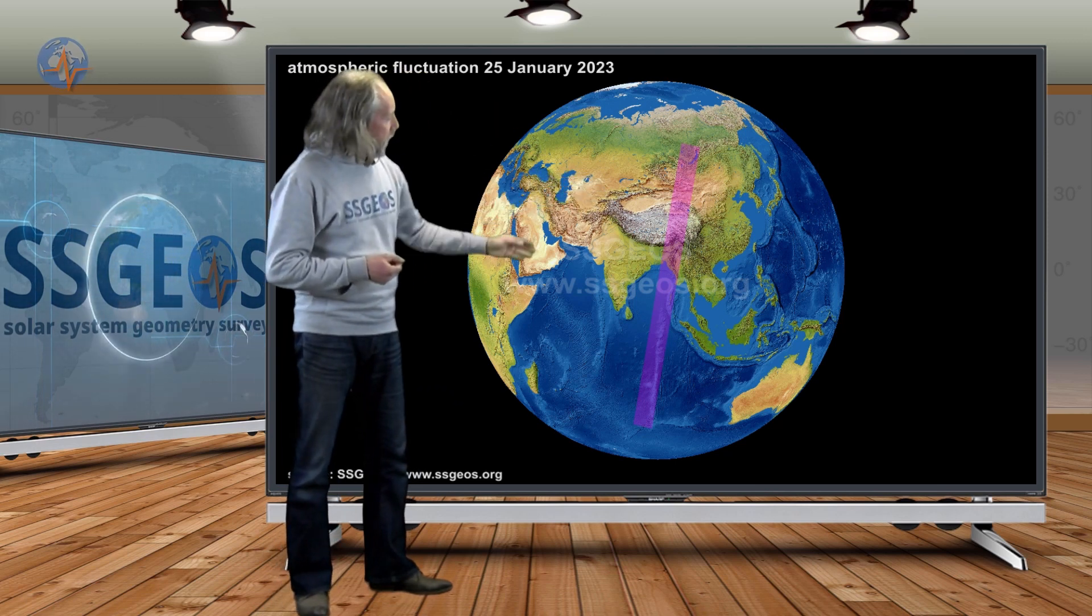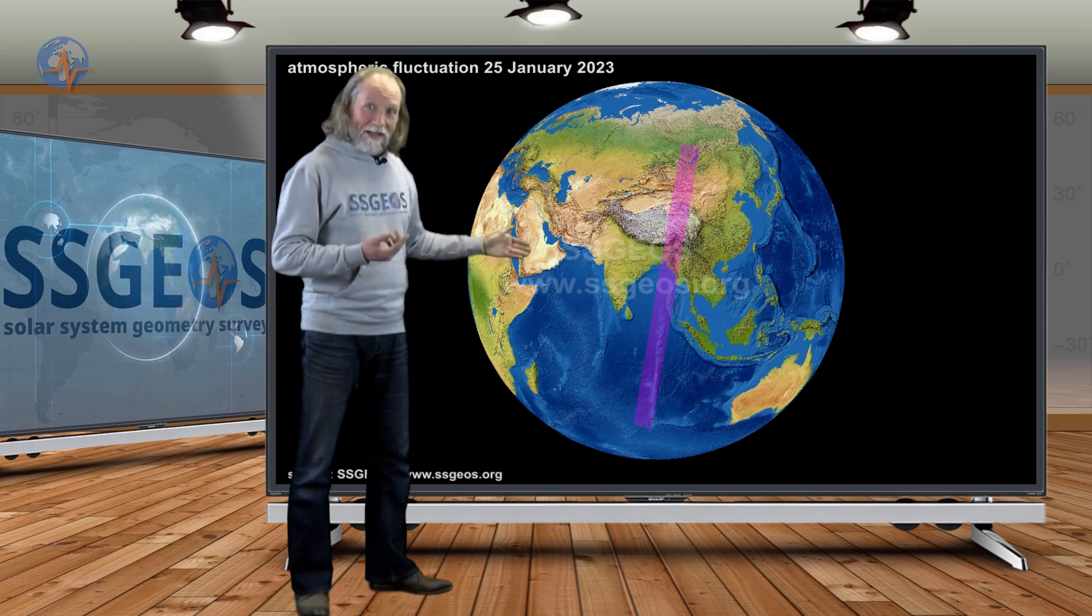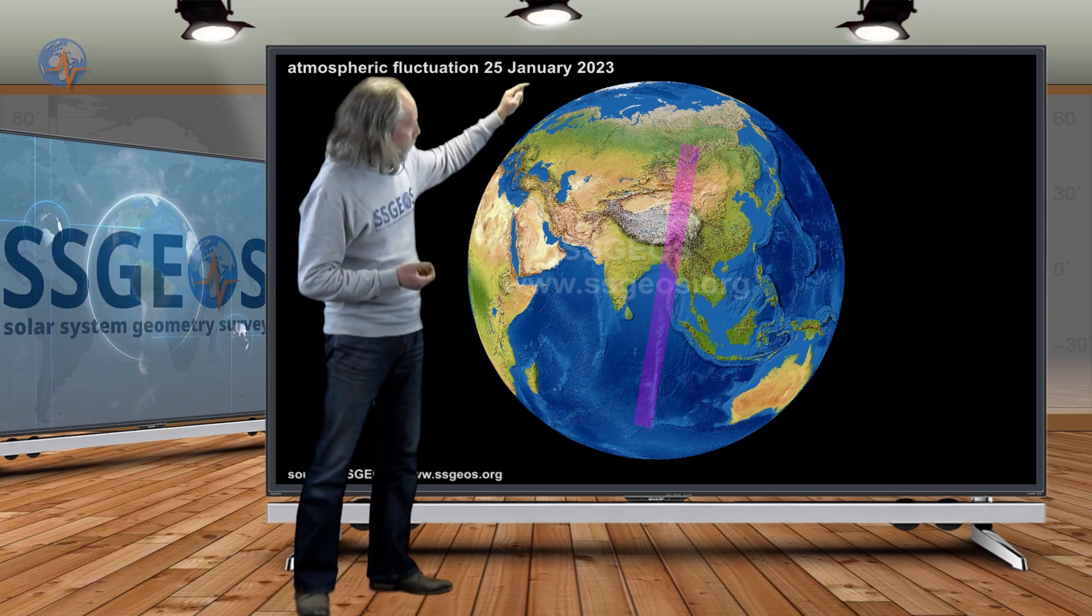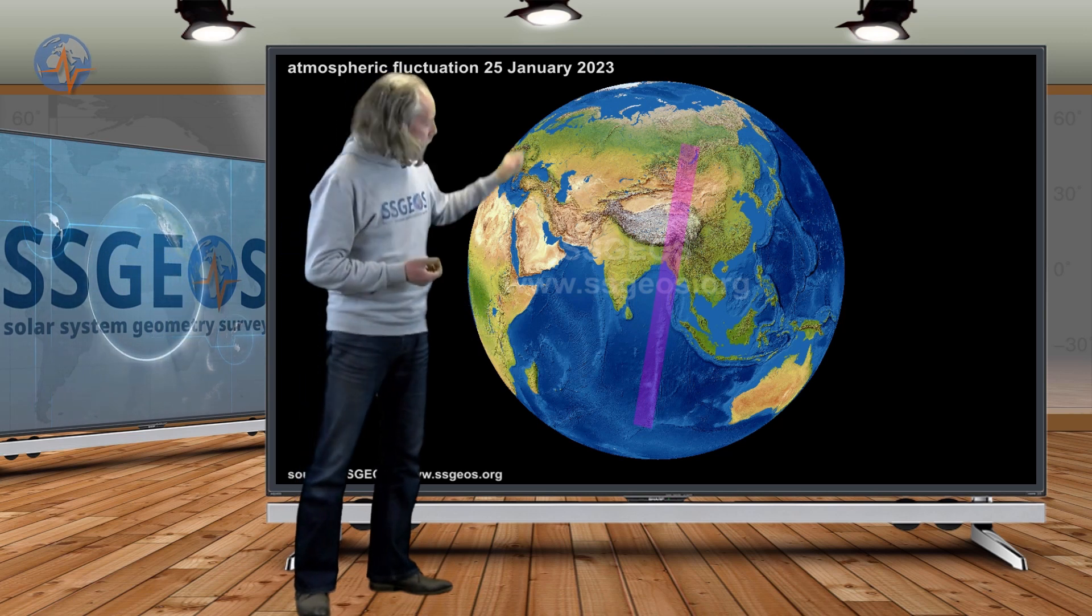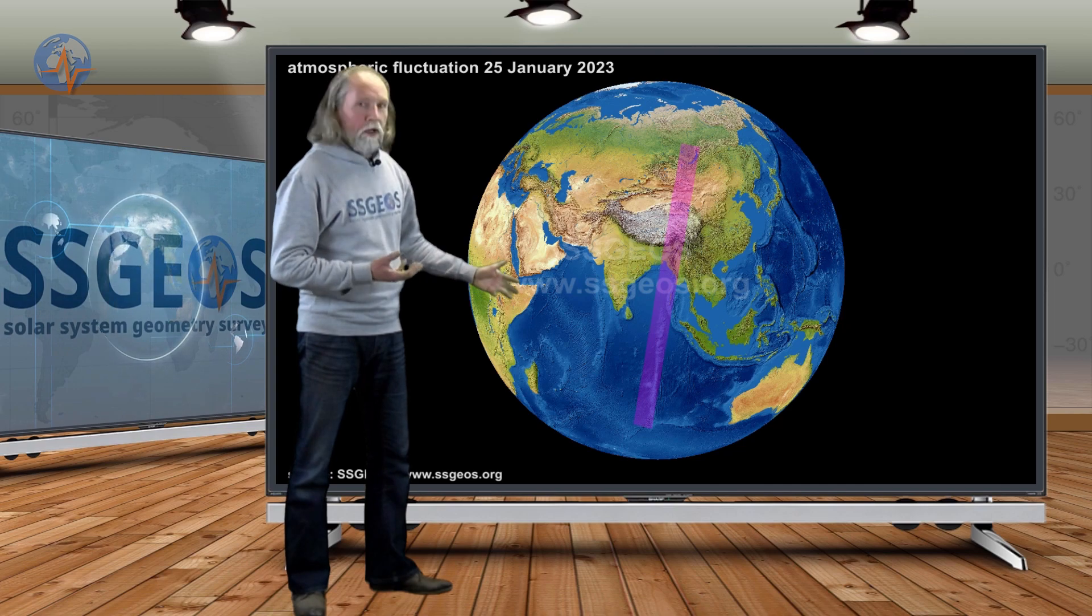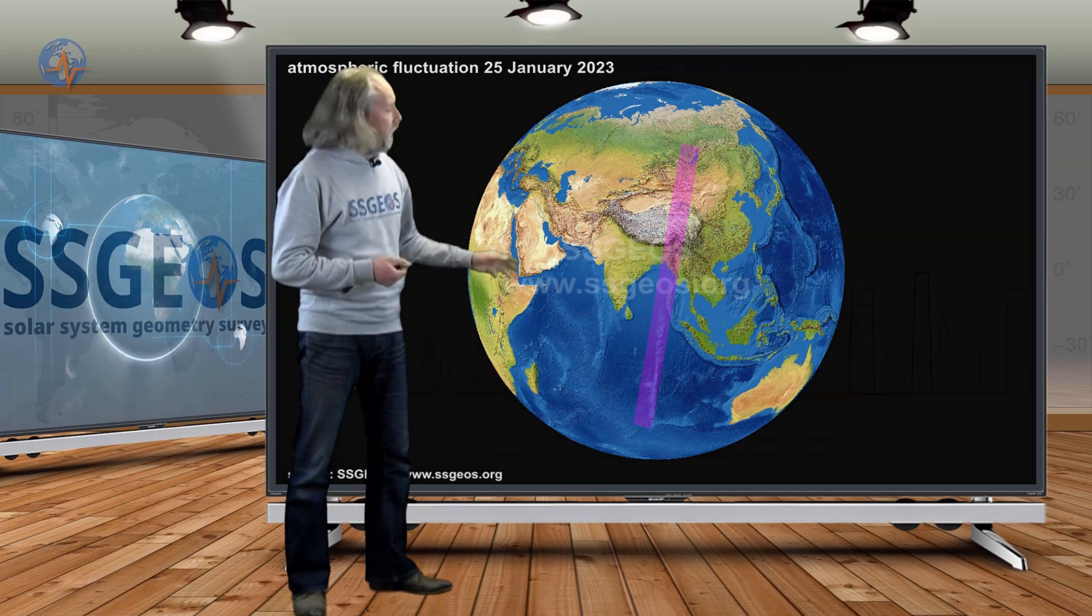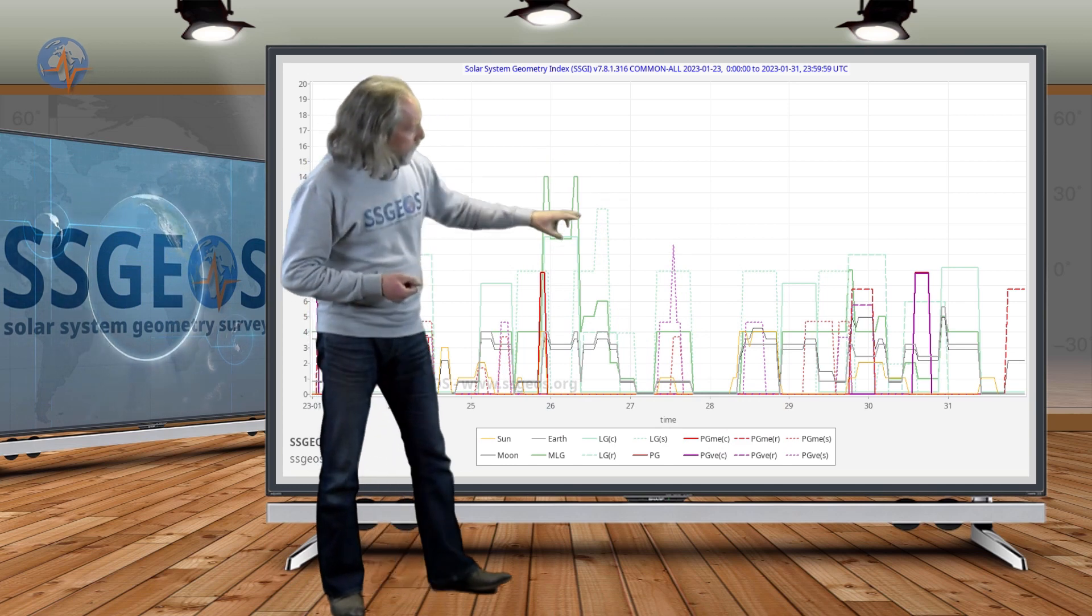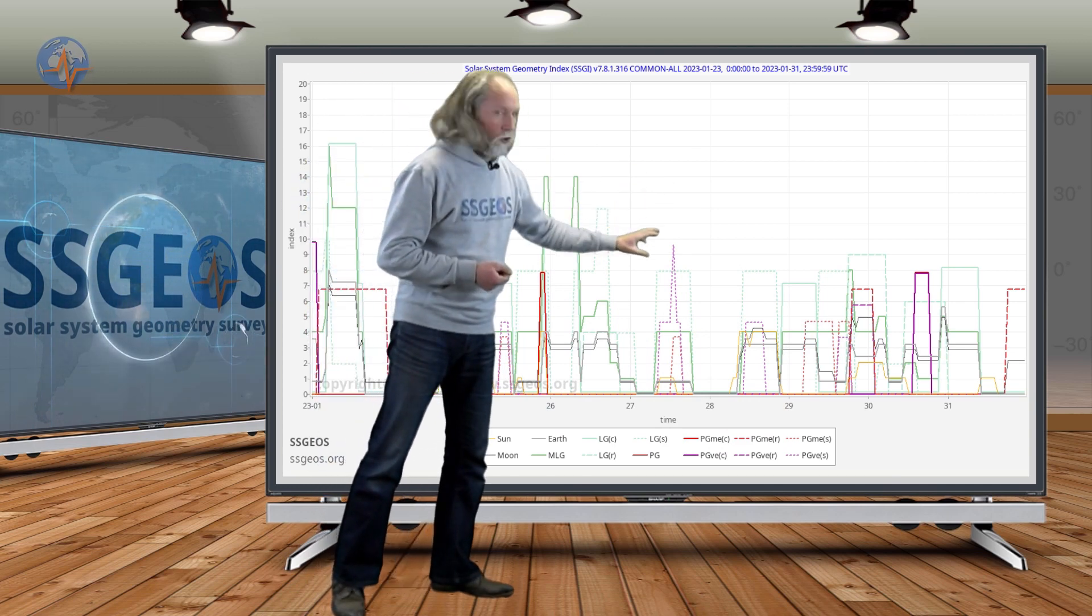The fluctuations are over Asia again on the 24th, 25th, marking the part from Lake Baikal in the north down into the Indian Ocean. And that could possibly become interesting around the 30th or the 31st, following some critical planetary geometry there. I'm not sure about that yet.